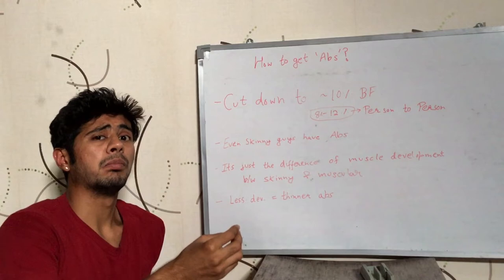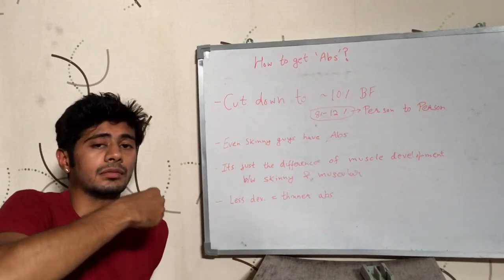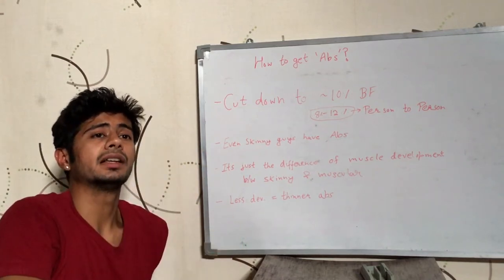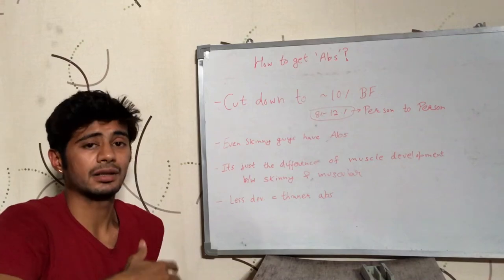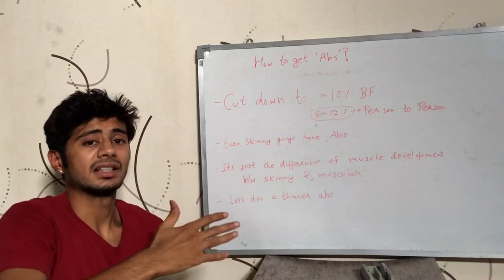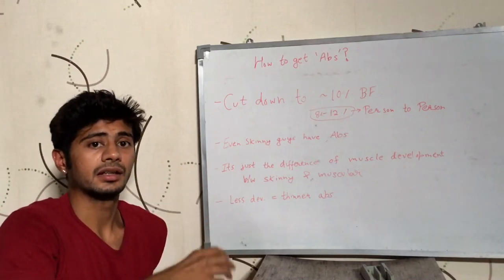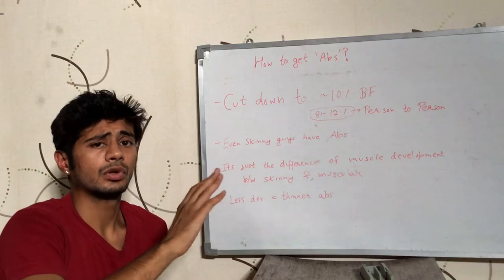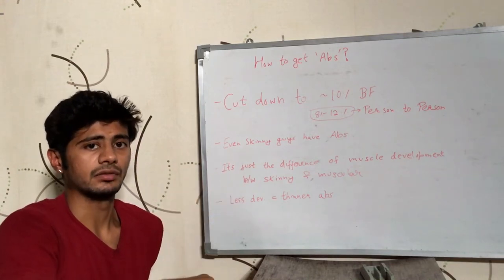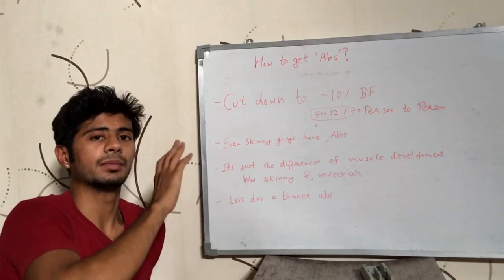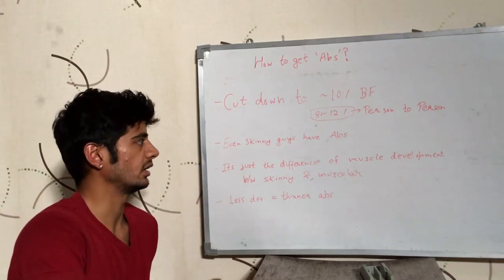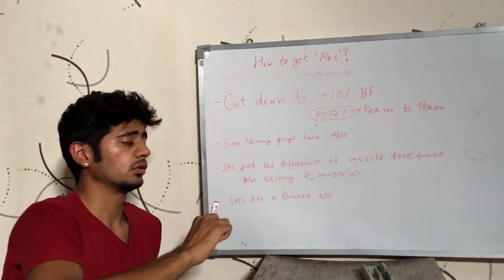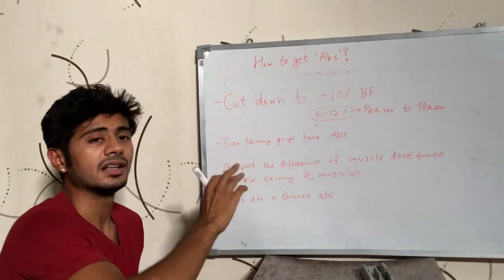Until you lose a lot of fat, you cannot see the muscle in your body. In a normal situation, fat will also be visible over the muscle. You cannot see the muscle through the fat. So fat loss is the critical factor.